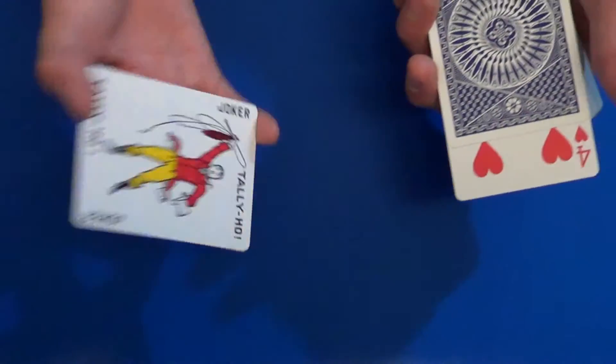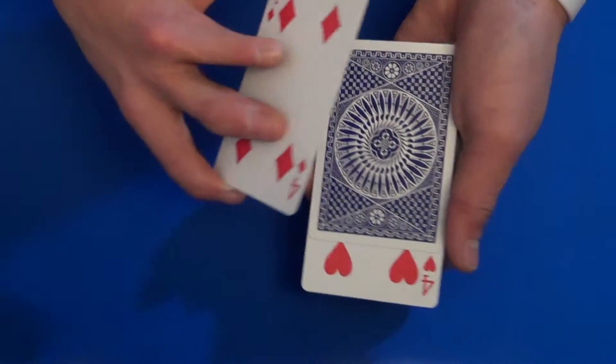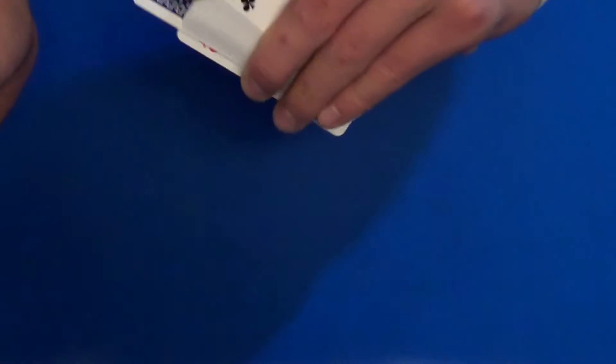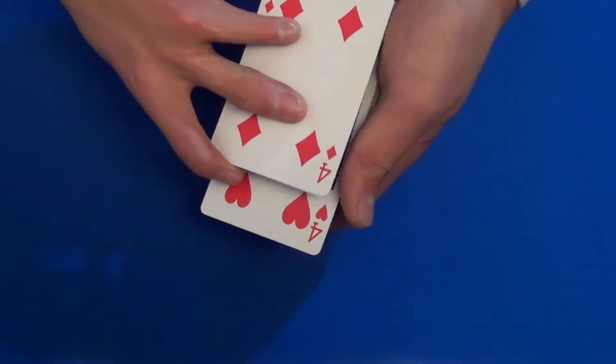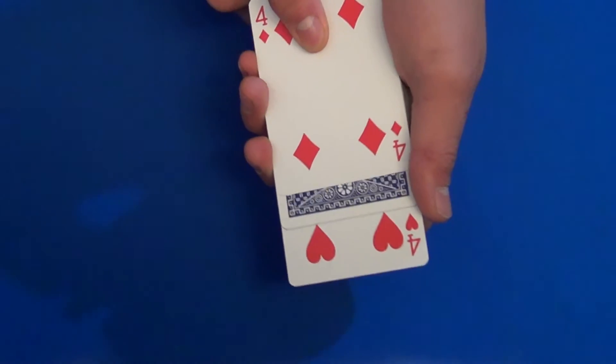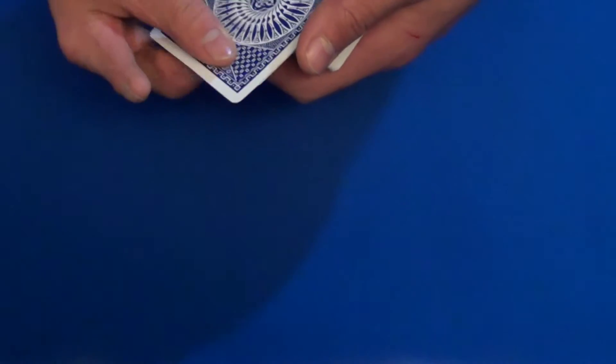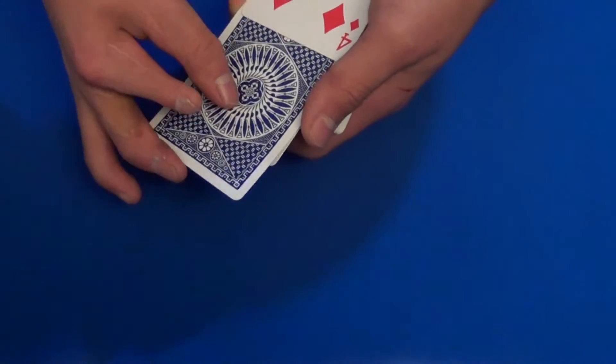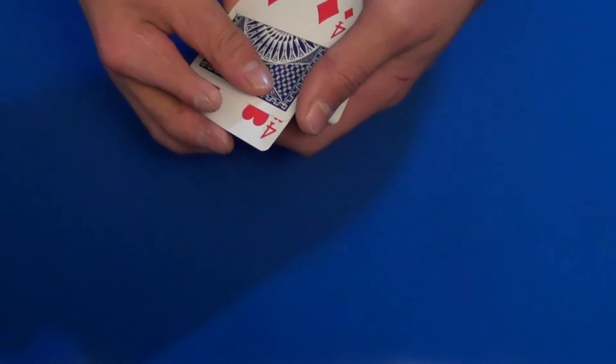So you're going to place the joker on top of the ace right here. Now here's the cool part: you're going to pull back the four to reveal this card, which is the joker, the very top card here, and you're going to make it flush with the other four.